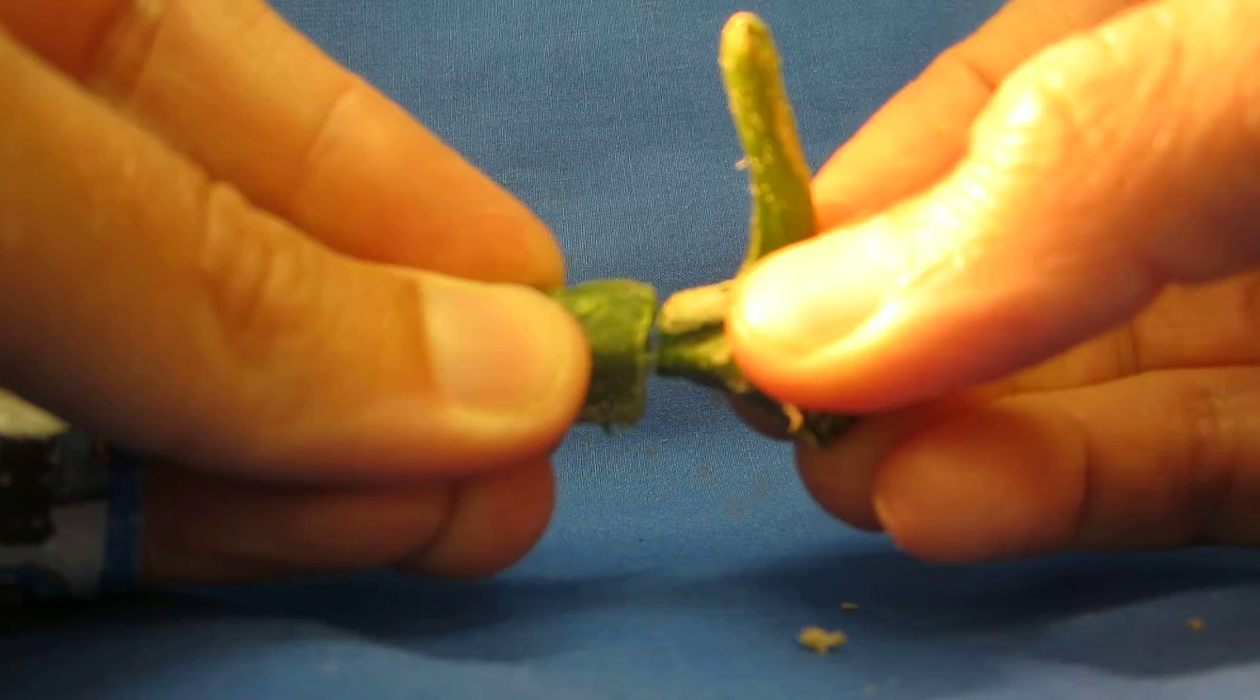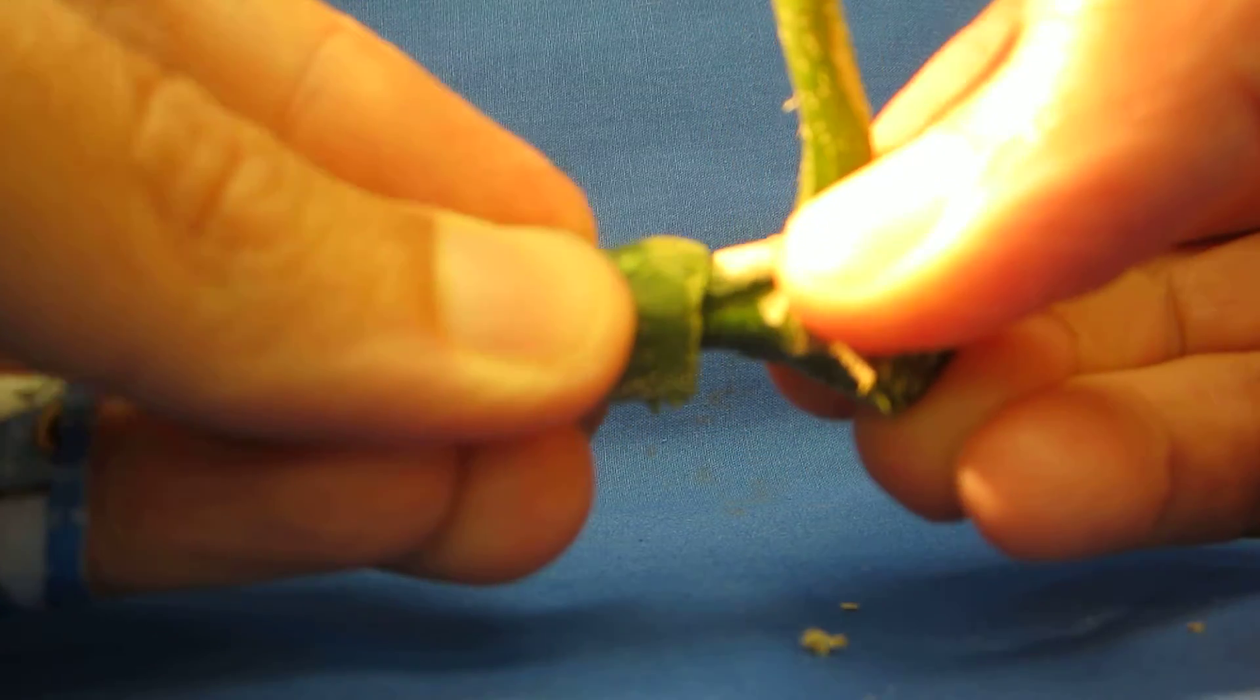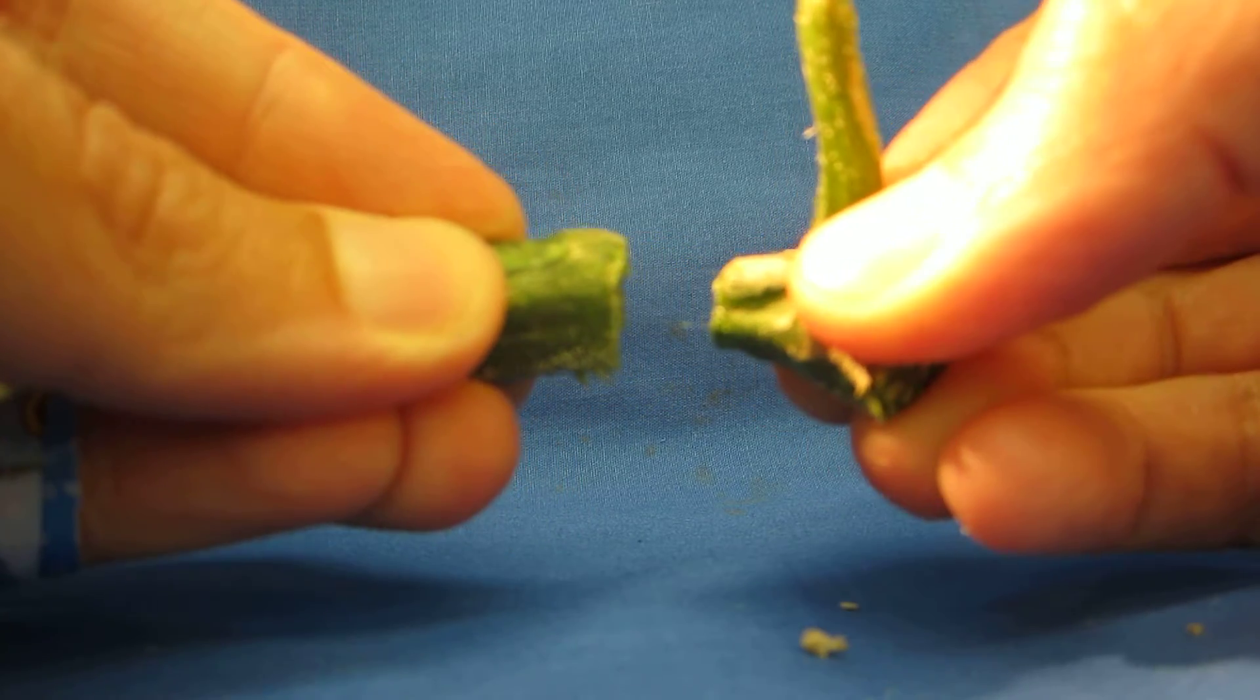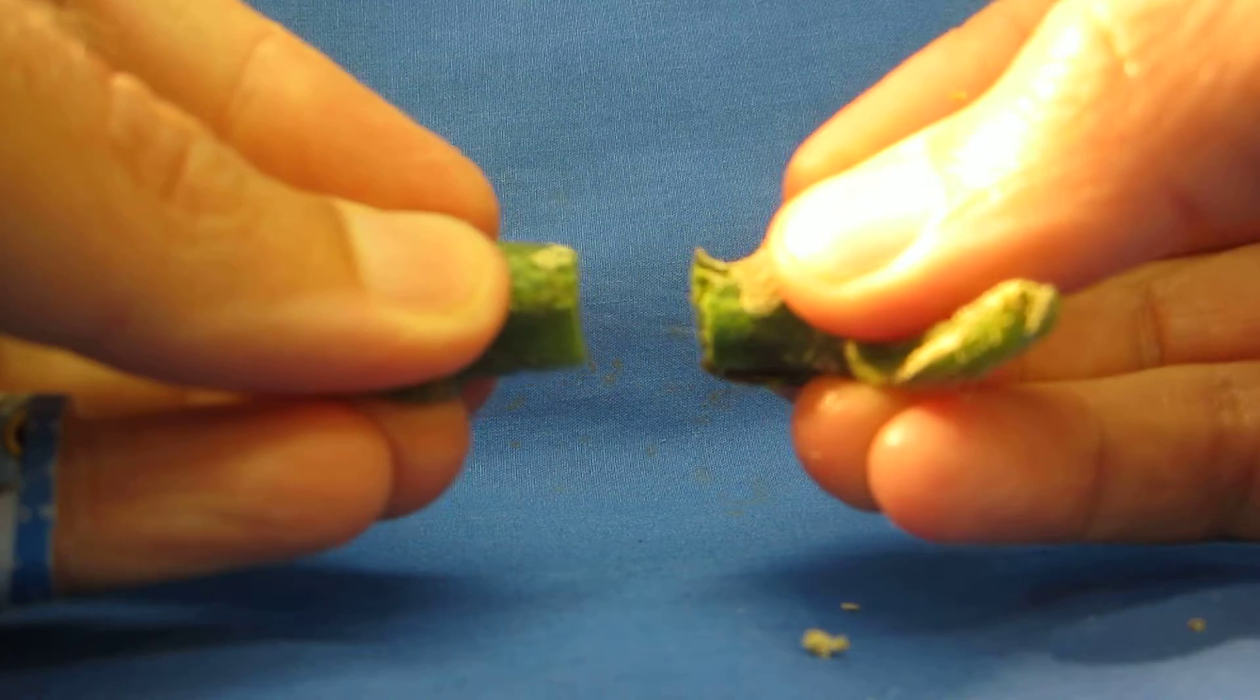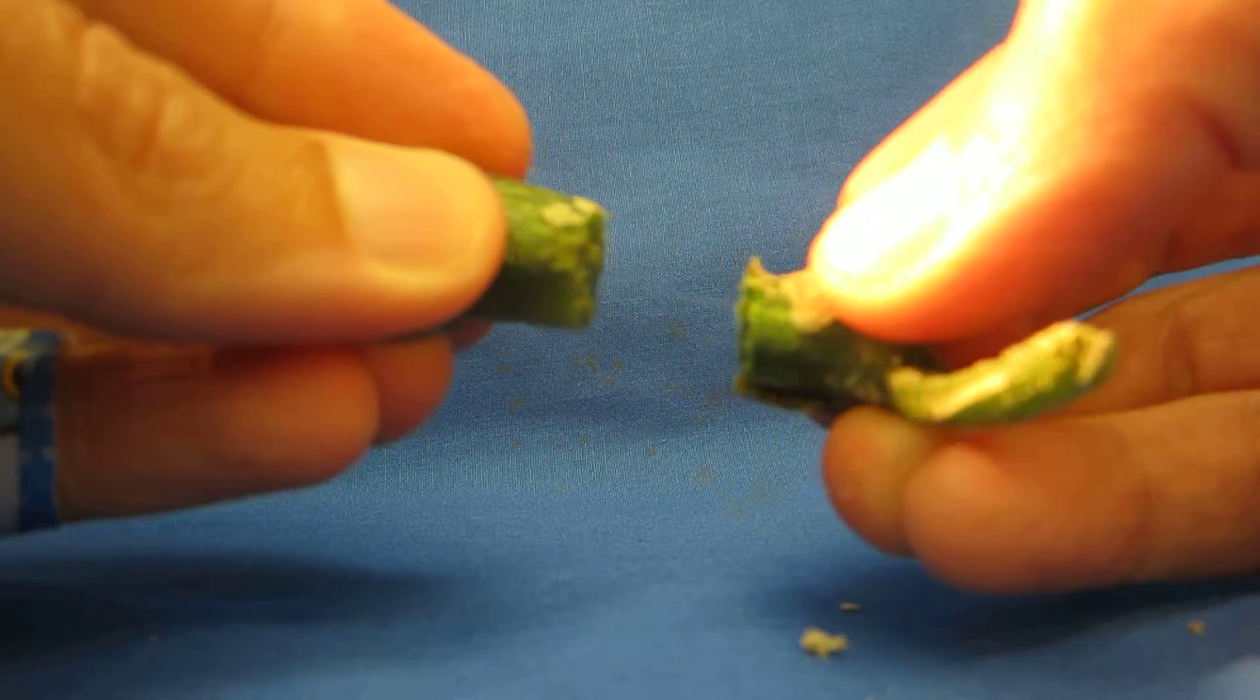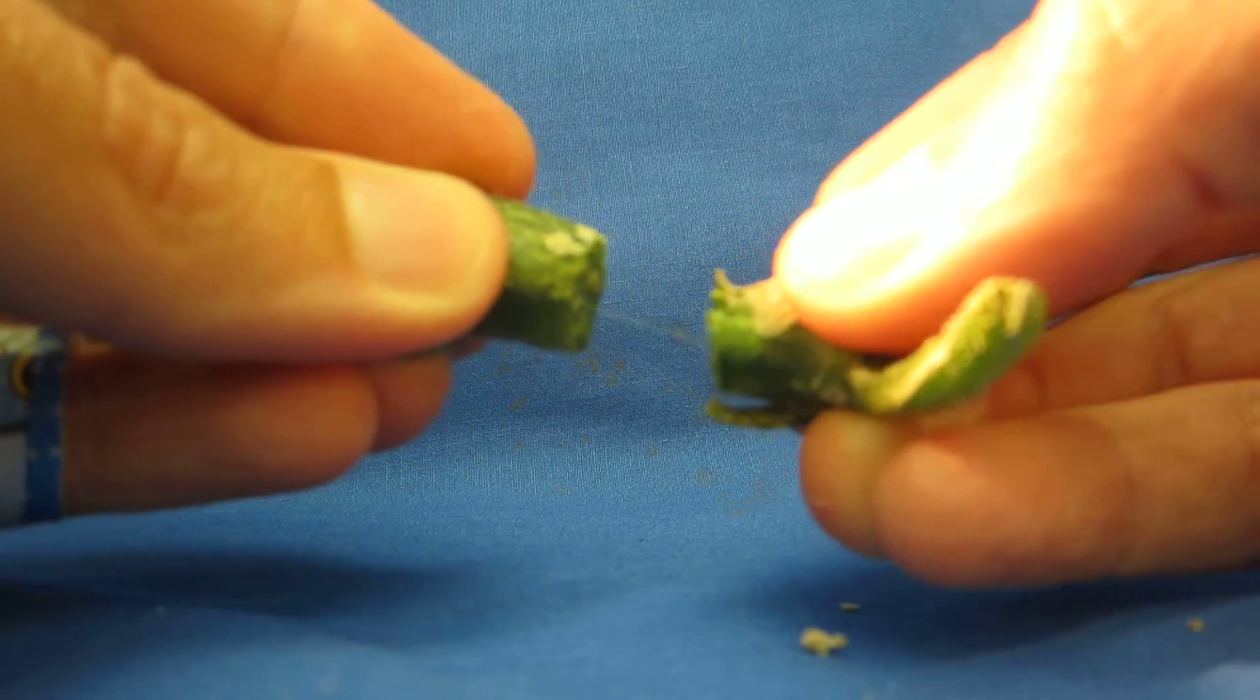You can see those little strands, those light-colored strands. That shows how the bacteria are growing in the water conducting tissue of the plant.